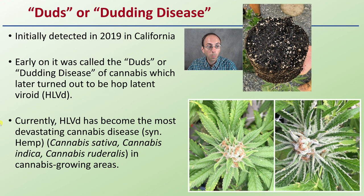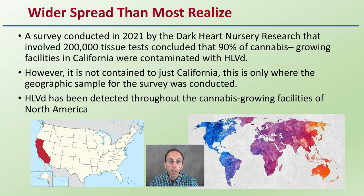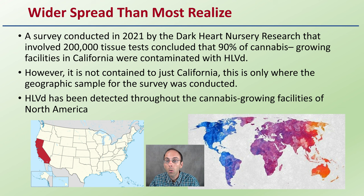Currently, Hop Latent Viroid has become the most devastating cannabis disease in cannabis growing areas, and it's very widespread — wider spread than most realize. A survey conducted in 2021 by Dark Heart Nursery Research involving 200,000 tissue tests concluded that 90% of cannabis growing facilities in California were contaminated. However, this is not just contained to California — that was only the geographic sample for this survey. Hop Latent Viroid has been detected throughout cannabis growing facilities across all of North America and probably beyond.